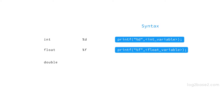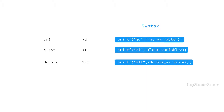For double, we have the format specifier %lf, and the syntax is: printf("%lf", name_of_double_variable).